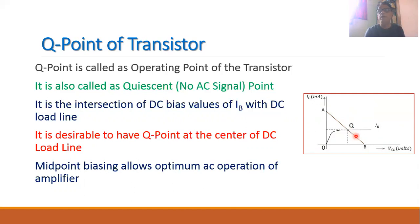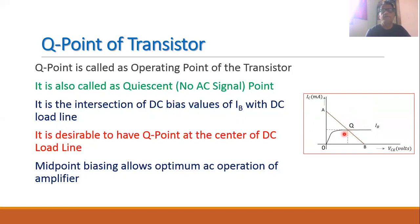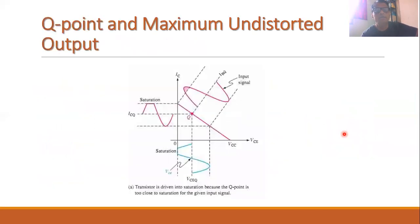We want to ensure that the transistor always remains in the active region. Therefore, the Q point is always desirable to have at the center of the load line.